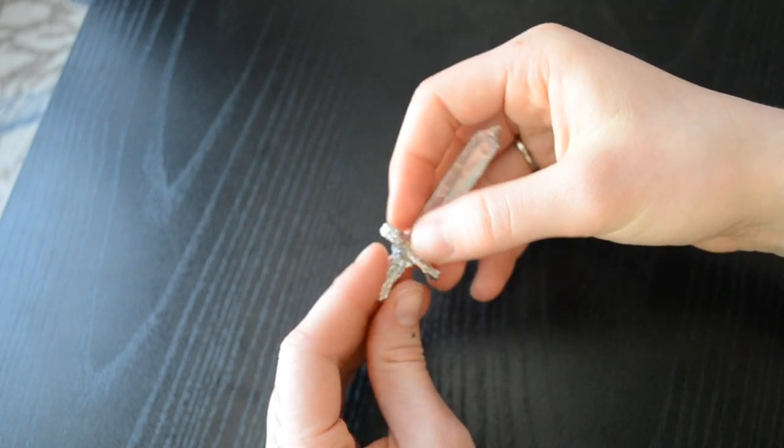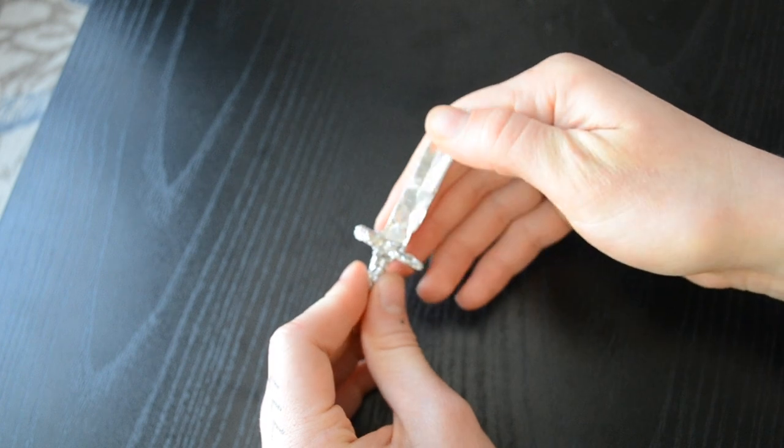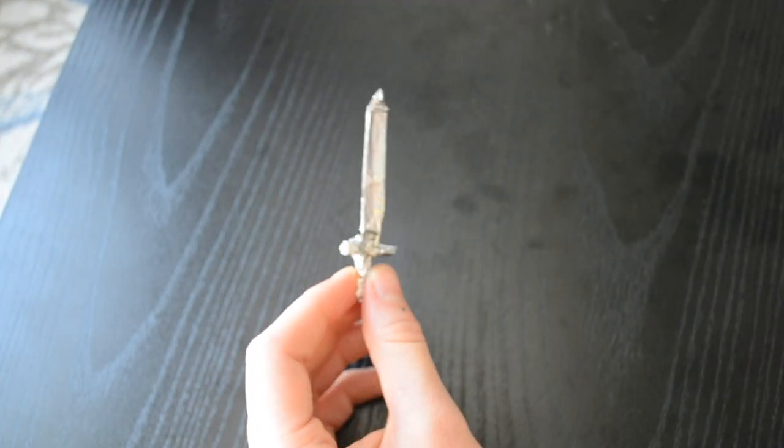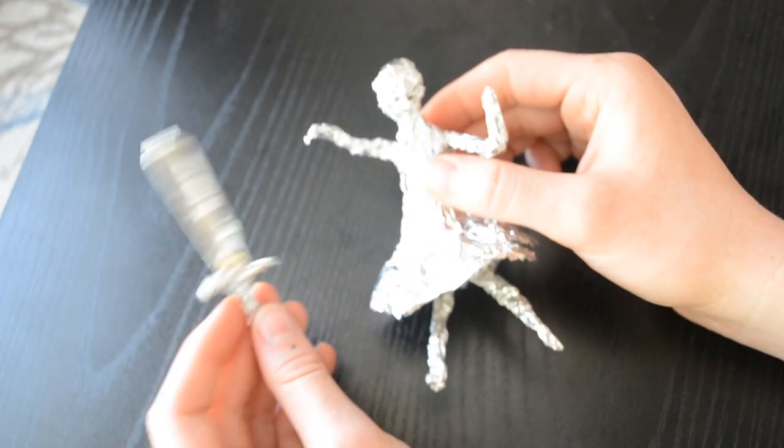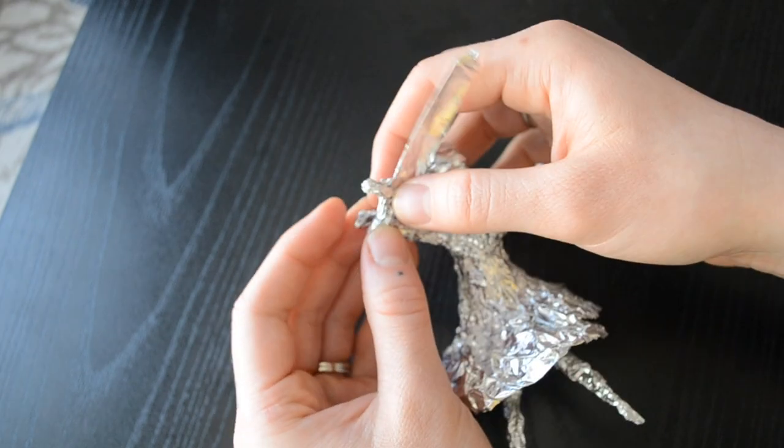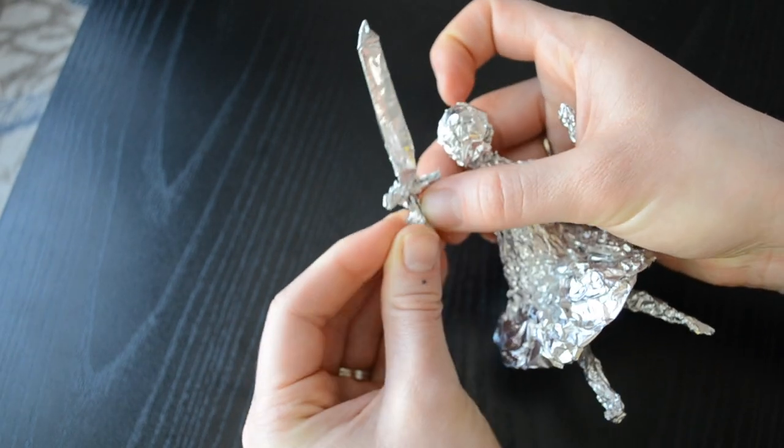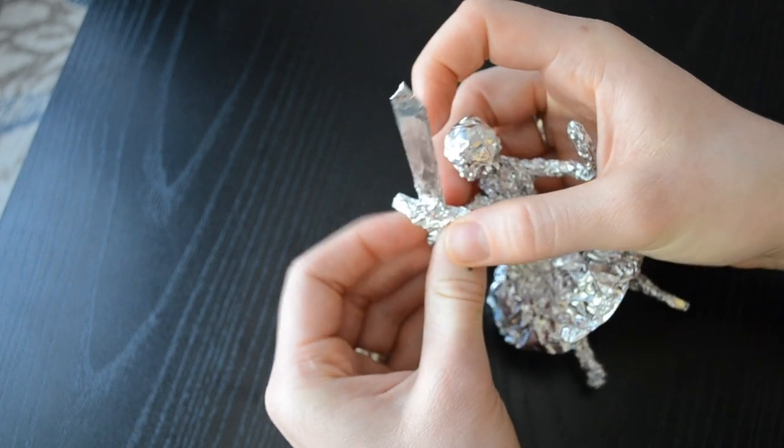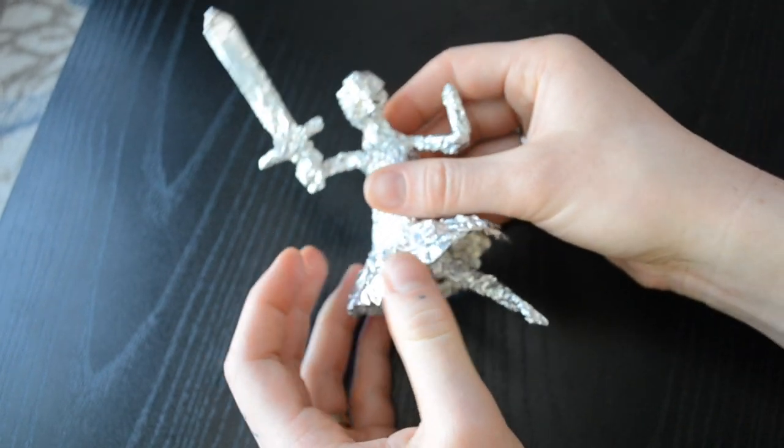And that's it. You're all done. If you want your blade to be skinnier, just fold it over more initially. If you want it to be beefy like this long sword I made, just fold it less. And that handle should be nice and sturdy so that it can be gripped by a foil person, but the sword will keep its shape.